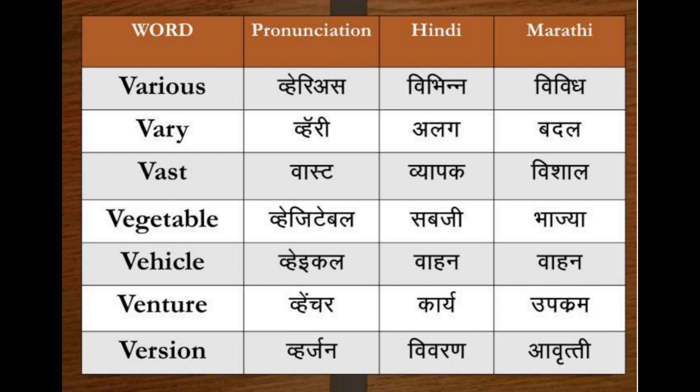Vast — Vapak, Vishal. Vegetable — Sabzi, Bhaja. Vehicle — Vahan, Vahen. Venture — Career, Upakram.